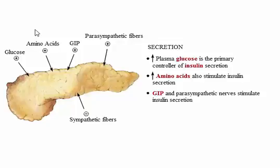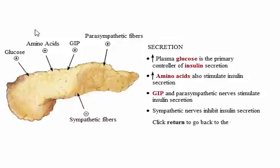Negative feedback from insulin to the beta cells keeps the supply of glucose to the tissues relatively constant. This negative feedback system can be overruled by action of hormones or the autonomic nervous system — for example, when sympathetic nerves inhibit secretion of insulin.